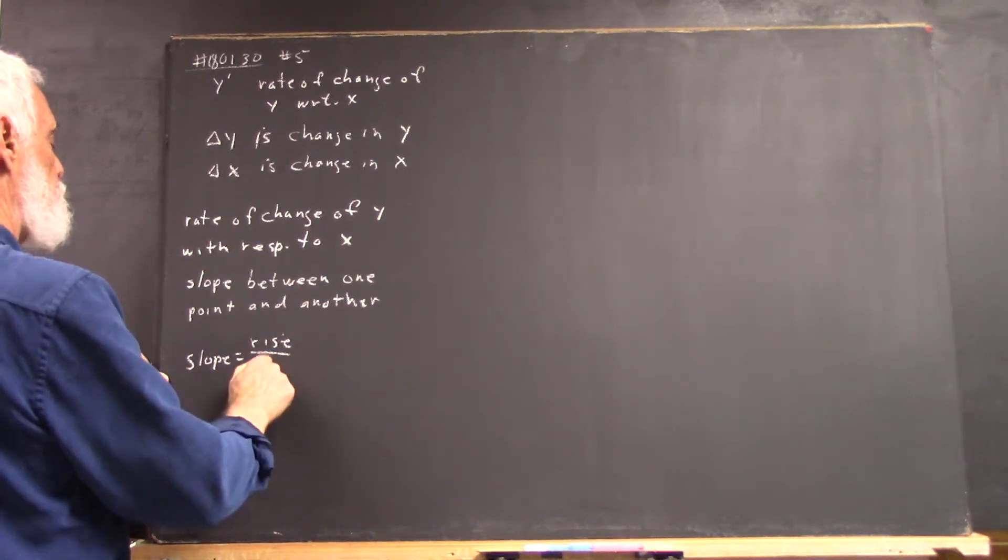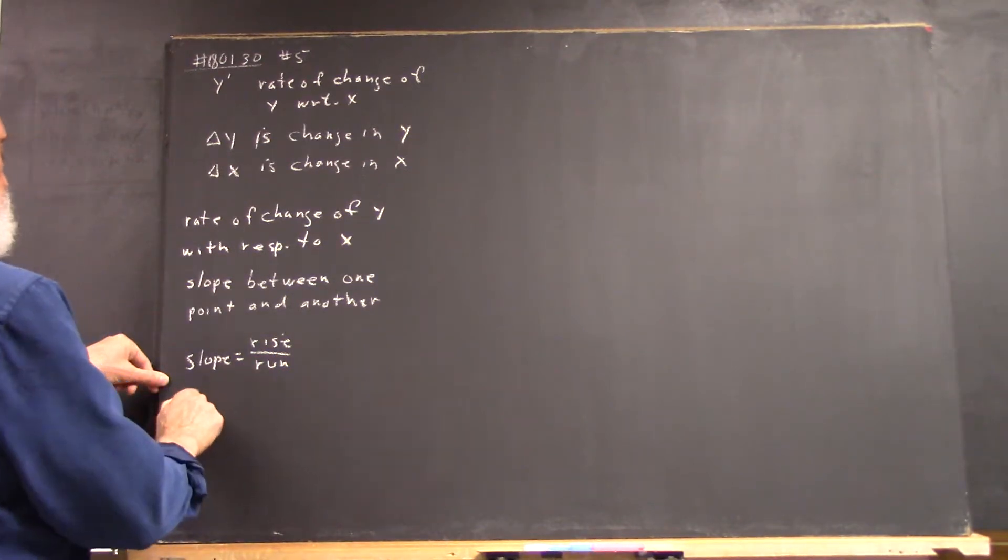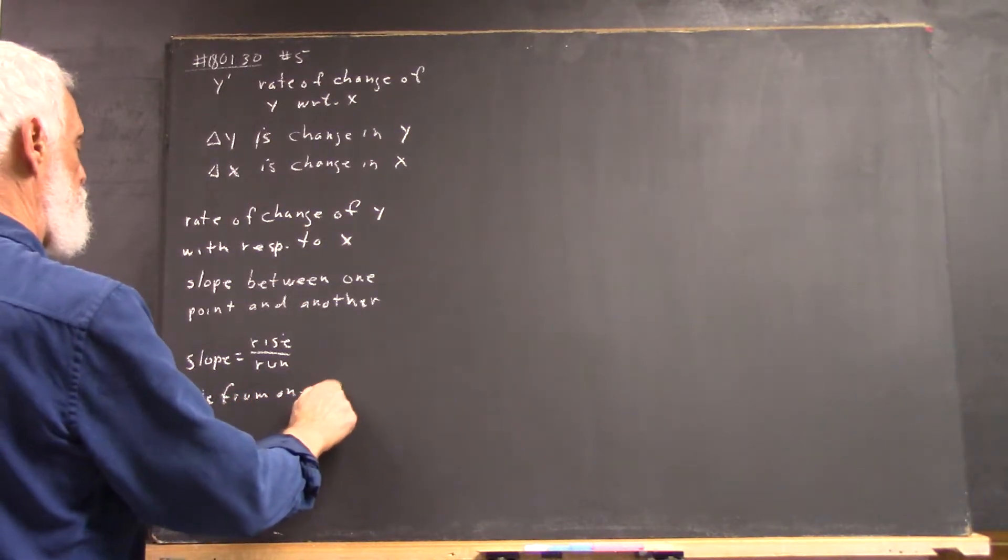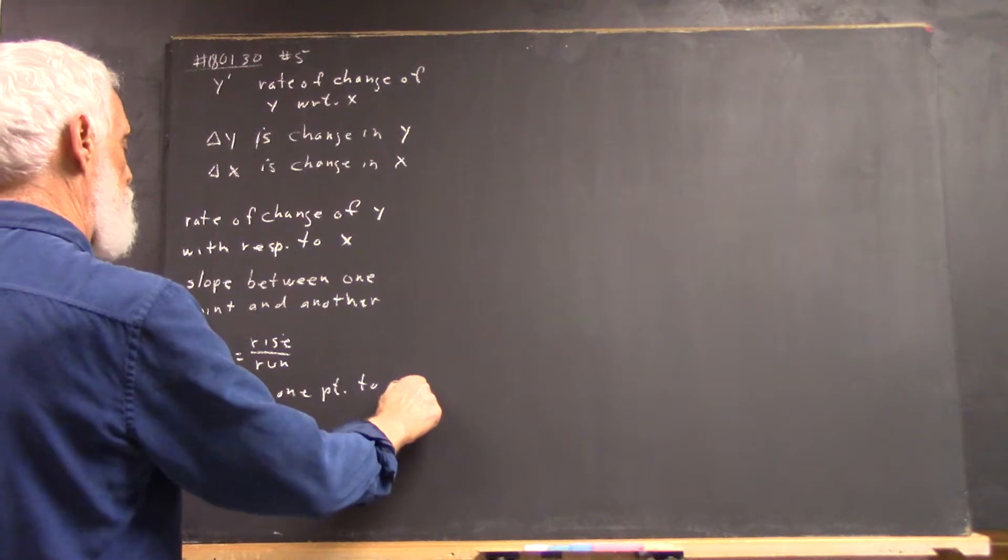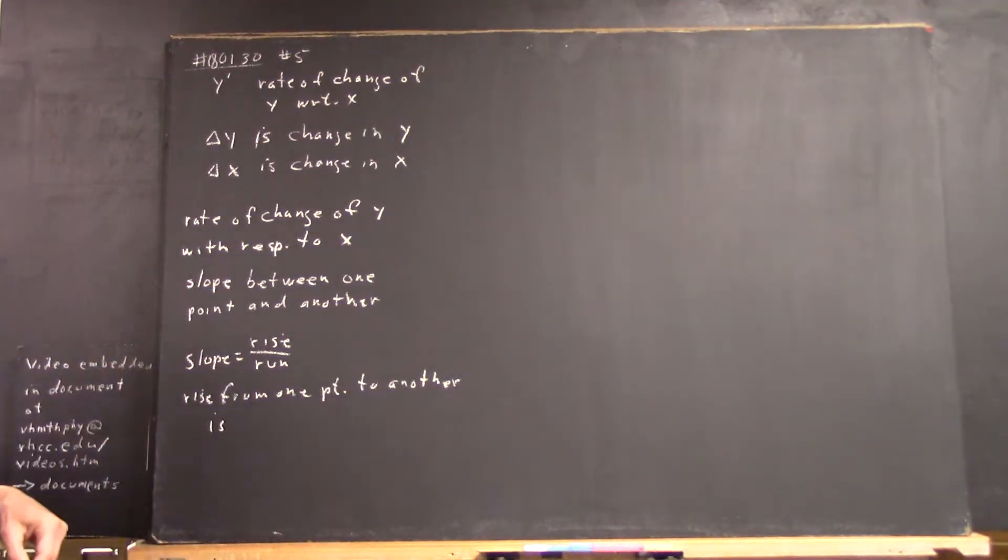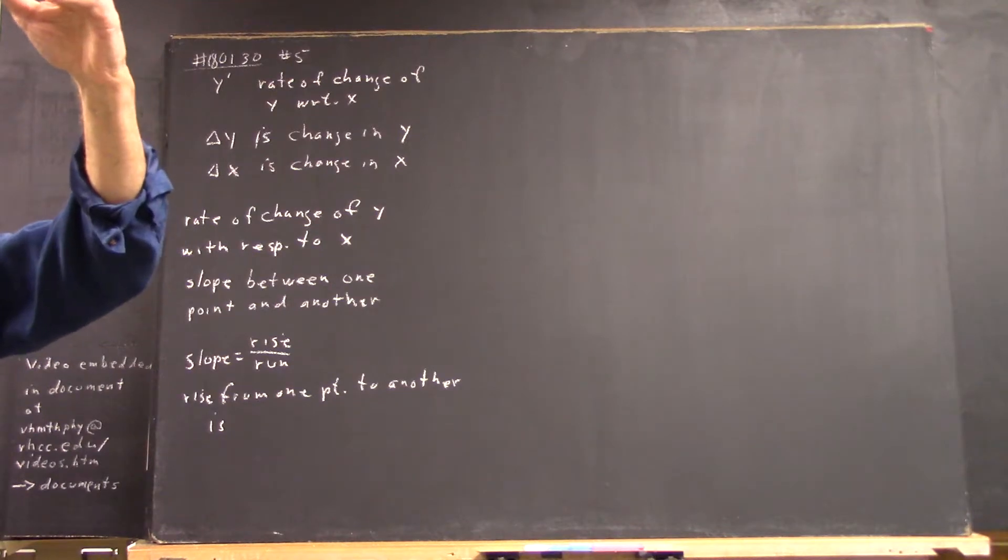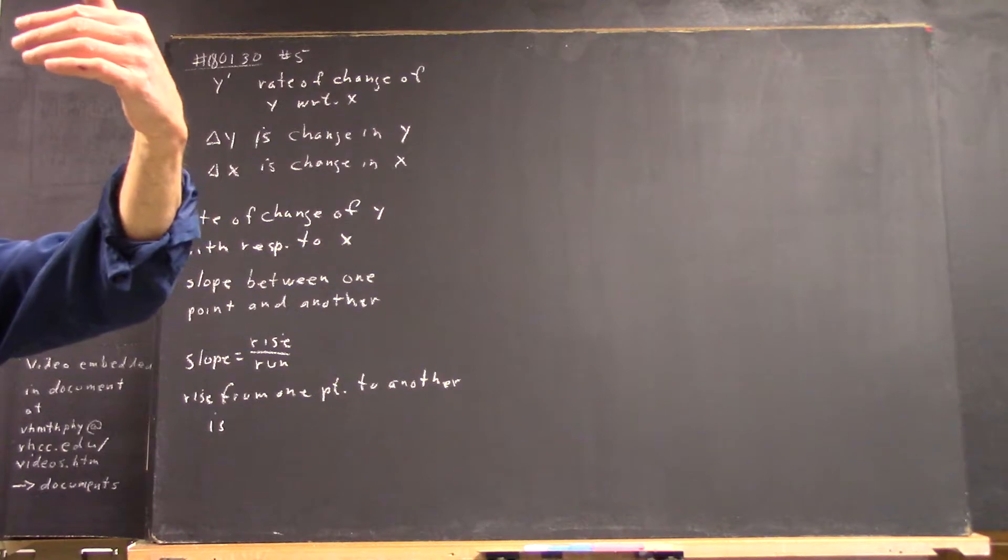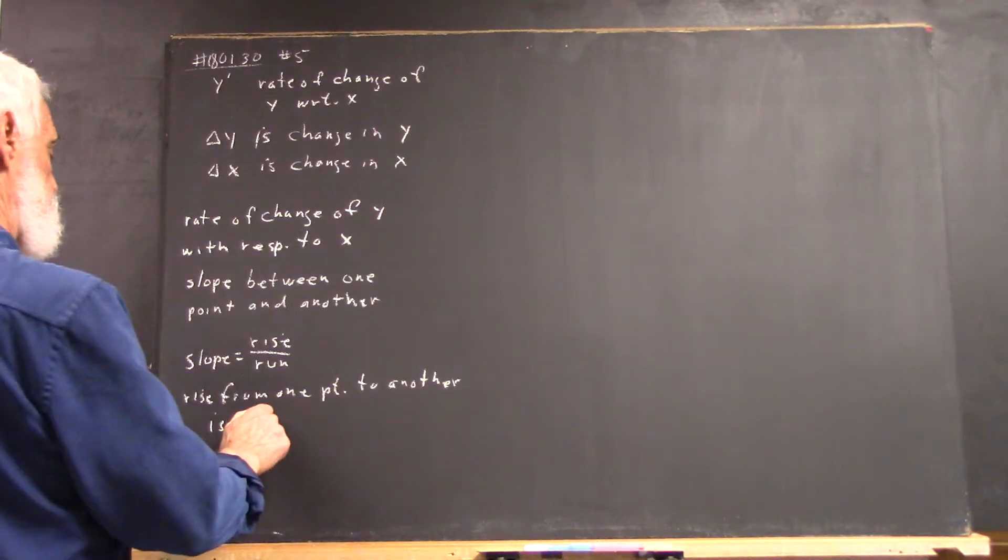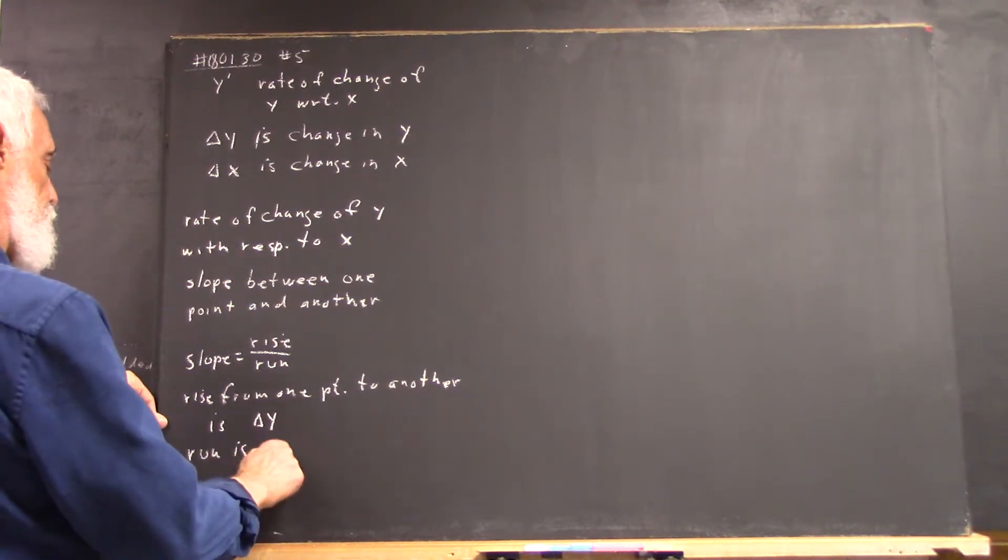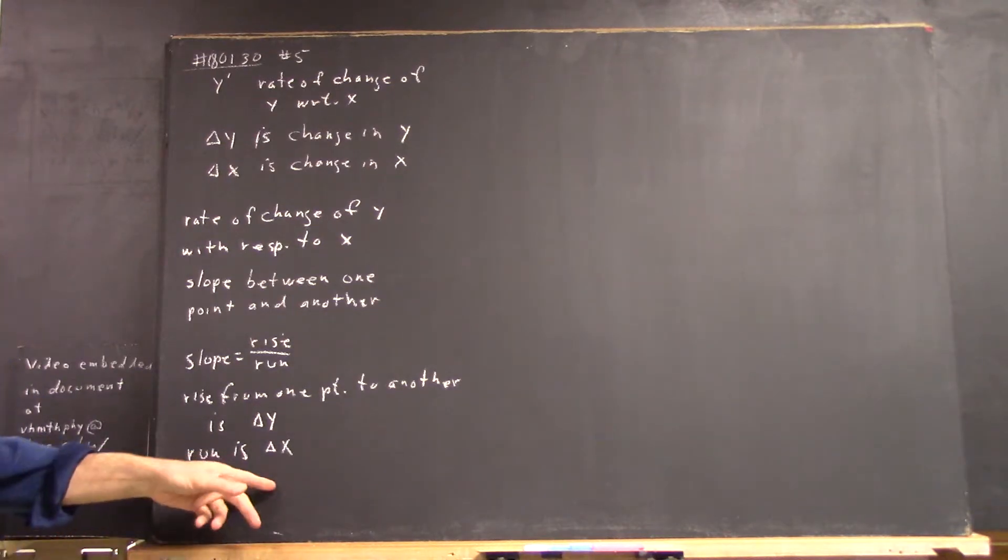Now, slope equals rise over run. Slope from one point to another would be what? I mean, I'm sorry, the rise from one point to another. How do you get the rise from here to here? The change in y. You subtract the two y coordinates but that gives you the change in y, right?